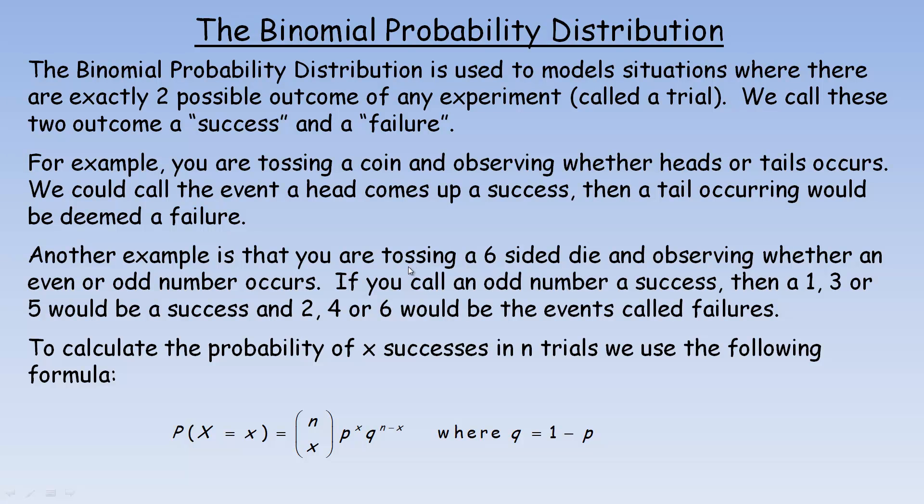Another example is that you're tossing a six-sided die, and somebody might say, well, there are six possible outcomes. How could this be binomial? But you have to define your variable that you're collecting data on such that there's only two possible outcomes. There are six numbers on a die, but you could say, let's define it this way. If you call an odd number a success, then if a 1, 3, or 5 comes up, it's a success. So a 2, 4, or 6 would be an even number that would be deemed a failure. You could say, well, I'm observing whether a 1 or 2 comes up. So having a 1 or 2 comes up is a success, and 3, 4, 5, or 6 would be a failure. So that's how you have to define it. Notice there's only really two possible outcomes, even though there's six sides on a die.